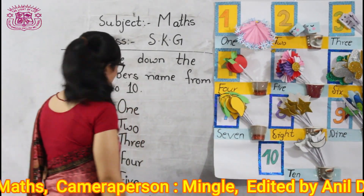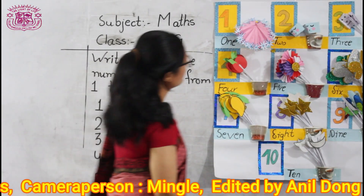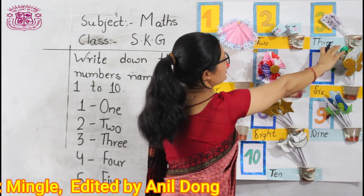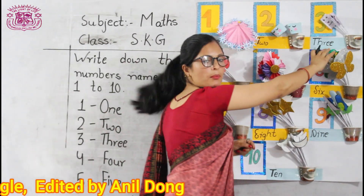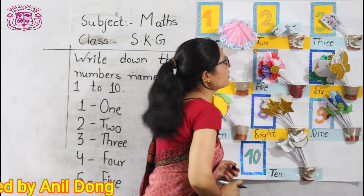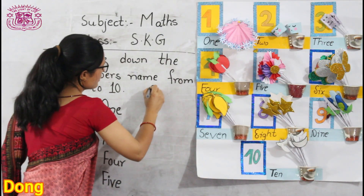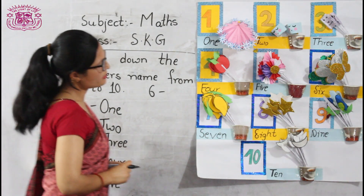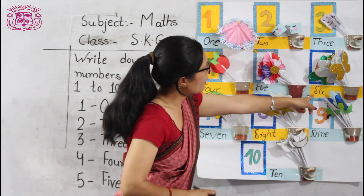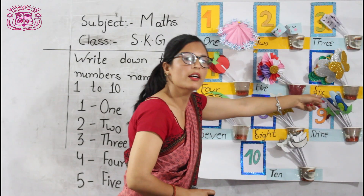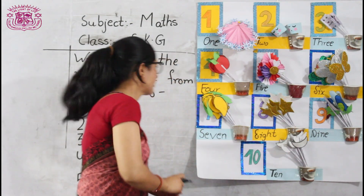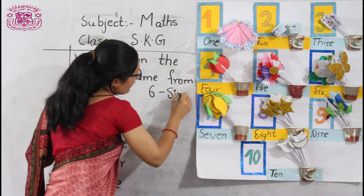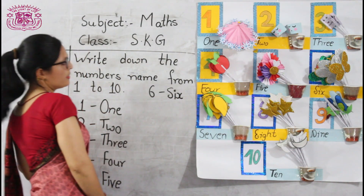Okay, what comes after 5? What comes after 5? 6. Very good. What is the spelling of 6? S-I-X. 6.